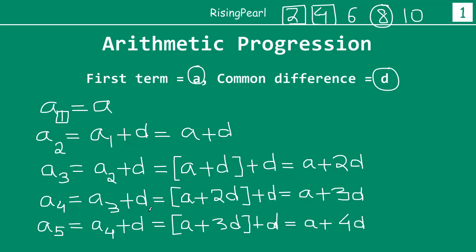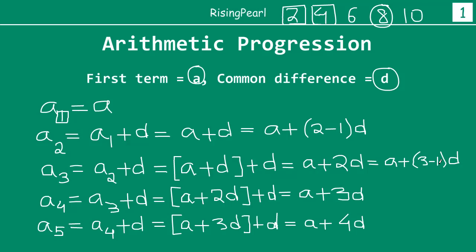Let's pause for a moment. If you look at the second term, we can write it as A plus (2 minus 1) times D, because 2 minus 1 is 1D, which is exactly what it is. Similarly, for A3 we can write this as A plus (3 minus 1) times D, because 3 minus 1 is 2D, which is what we have.